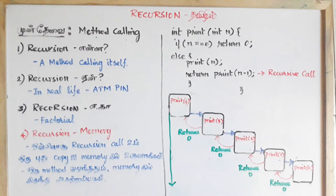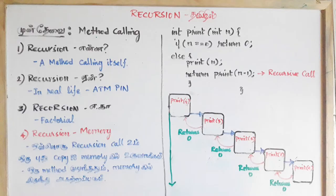In real life, recursion will be fine. In mathematical problems, recursion will be fine. For programming, it is easy. It is a factorial. If it is a factorial, the recursion will be fine.